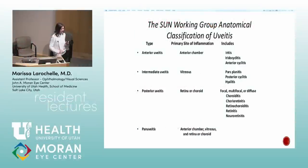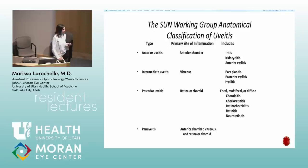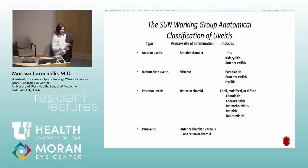Uveitis. We know anterior, intermediate, posterior, and pan uveitis — it's classified by where the predominant site of inflammation is. You're allowed to have a few cells floating around in the anterior vitreous and it's still anterior uveitis, as long as most of the inflammation is in the anterior chamber.